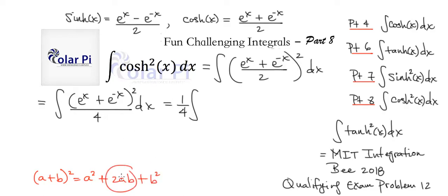then you'd know that this middle term is going to be 2 times e to the x times e to the negative x, because we're letting a be e to the x and b be e to the negative x.